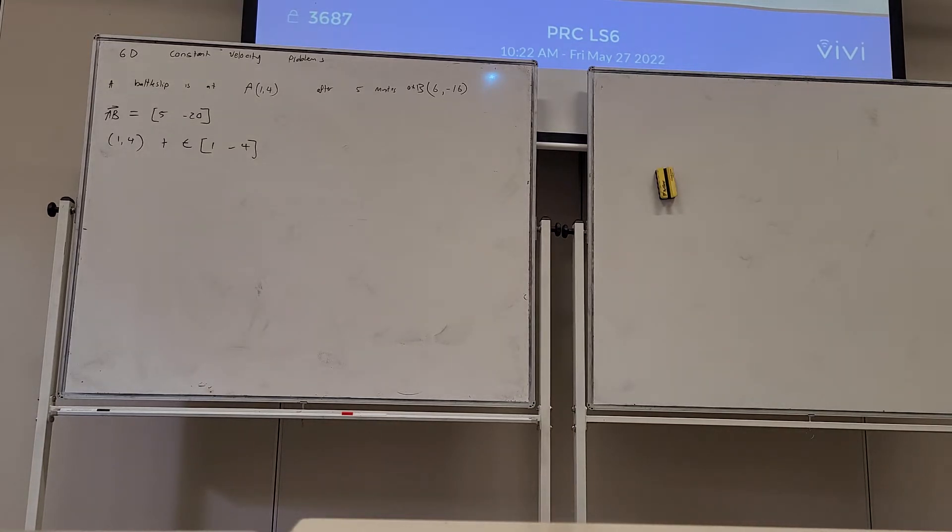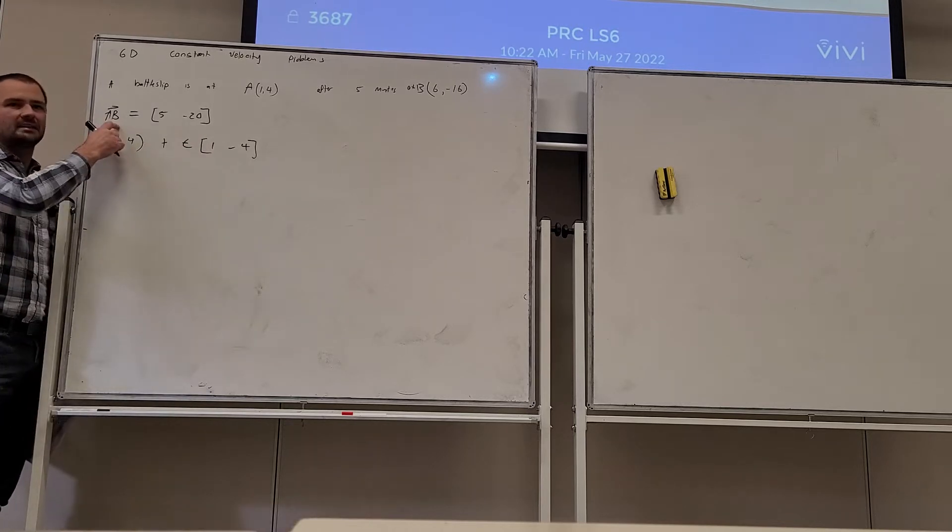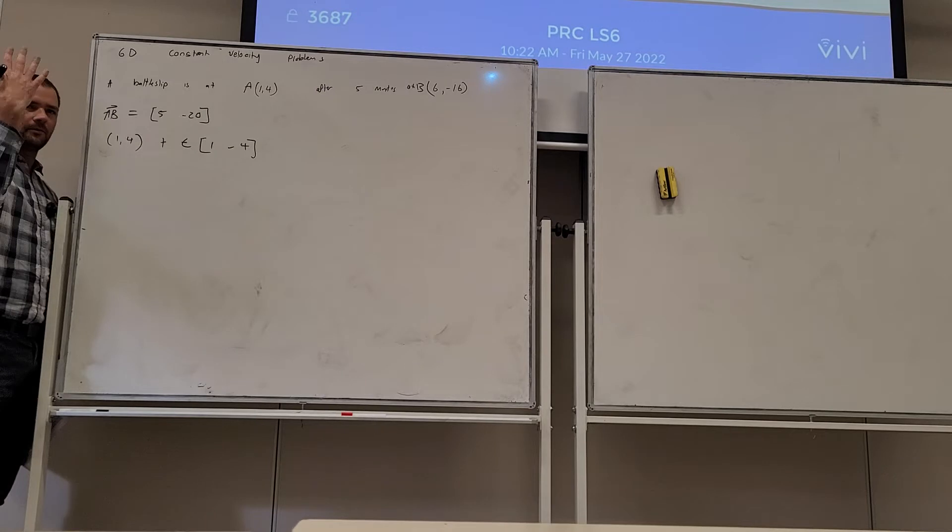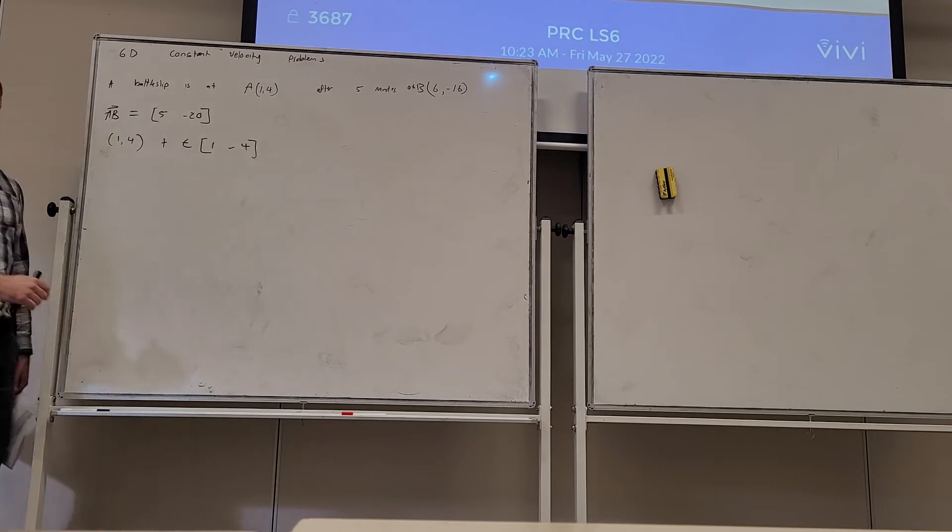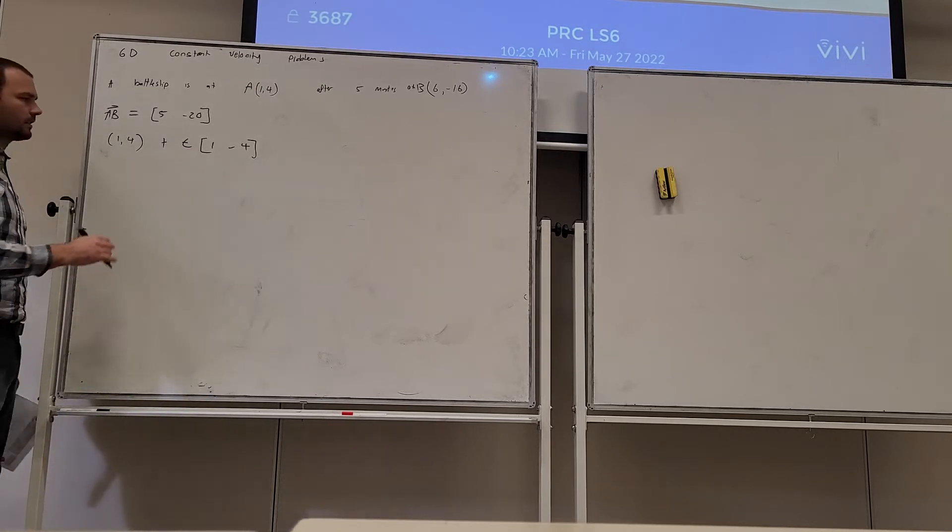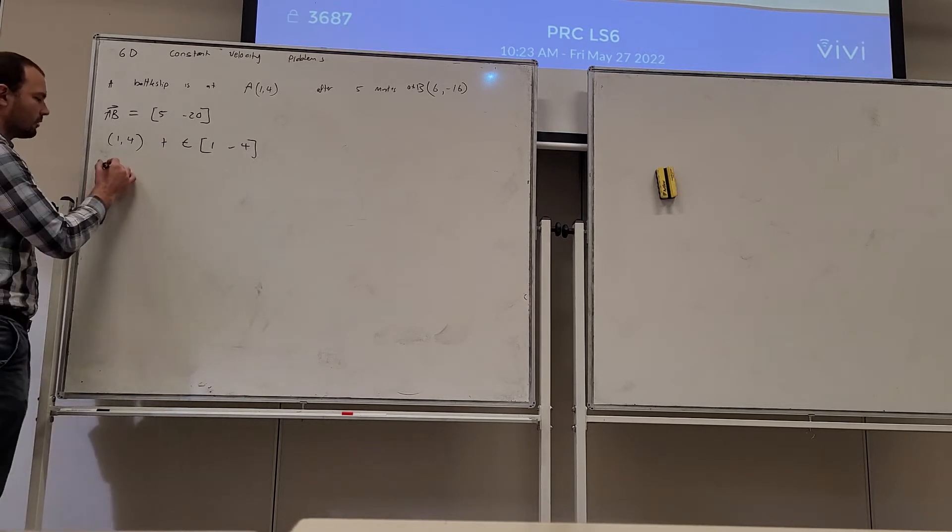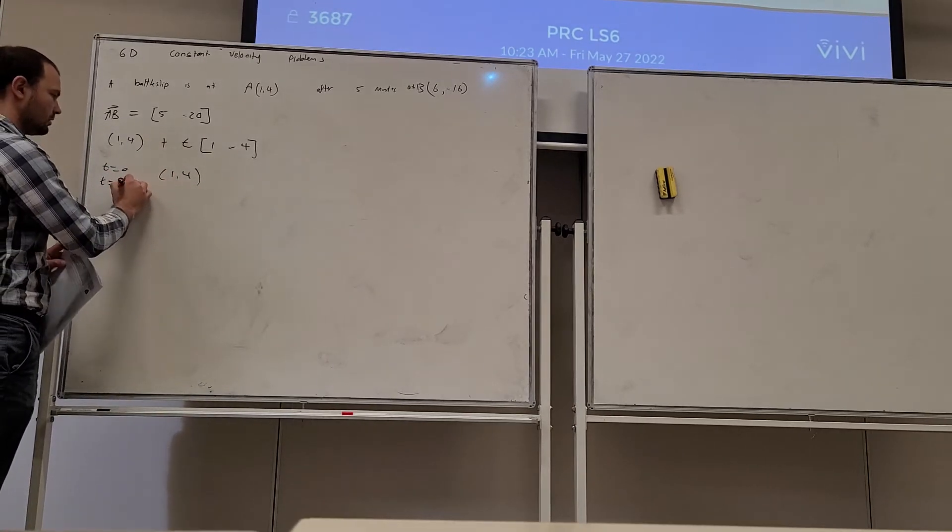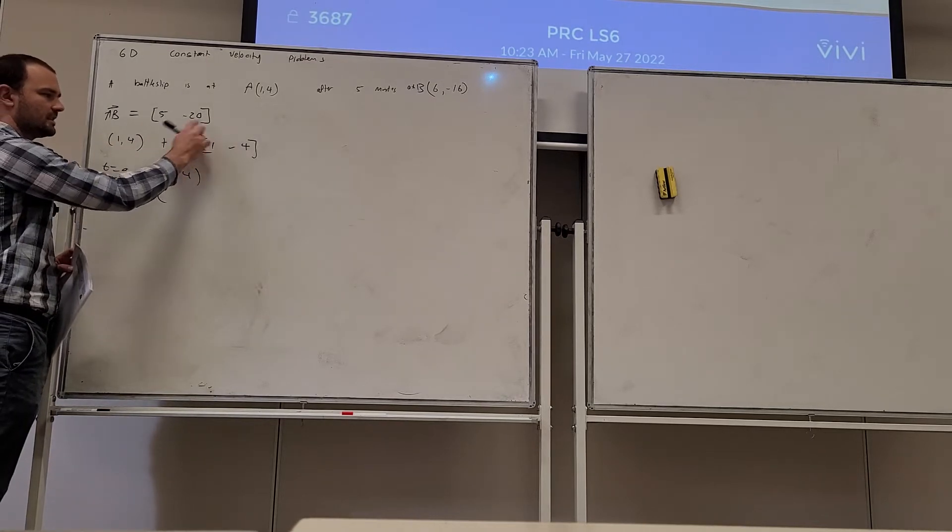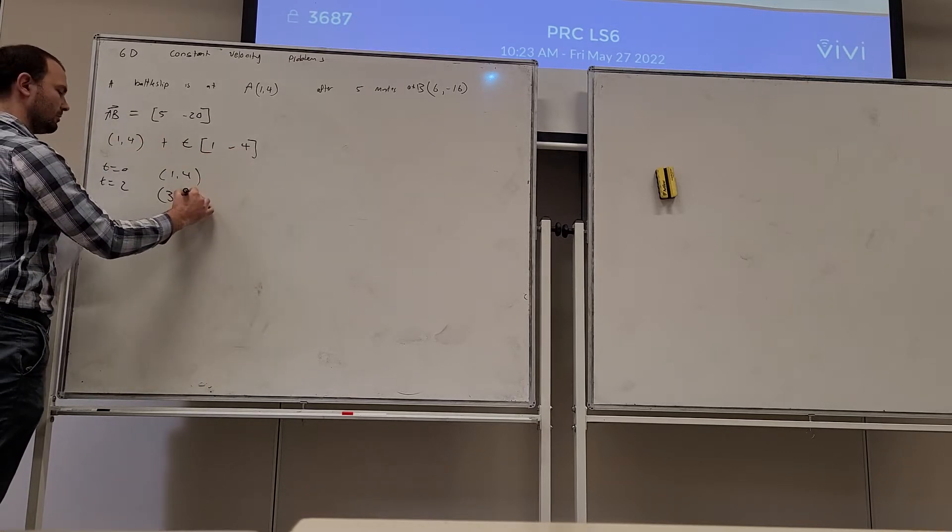Plot the path for T equals 0, T equals 2, 4 and 5. And this is useful as well because the vector from A to B is over 5 minutes, but now that I've divided it by 5 that's how far it's traveling per one period of time. So plot the path. Alright, so let's go. When T is 0 the coordinate is obviously 1, 4. When T is 2 we're going to have that plus 2 times this, so we'll have 3 and 4 take 8 will be minus 4.